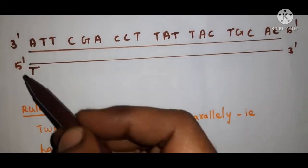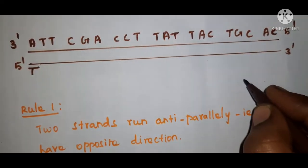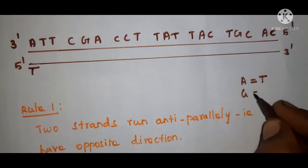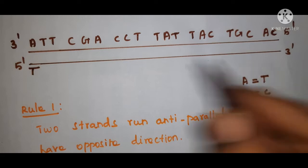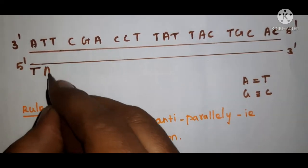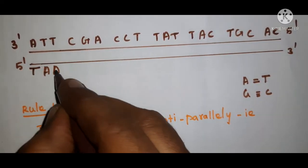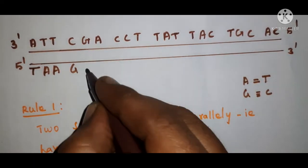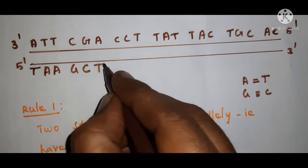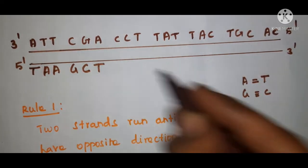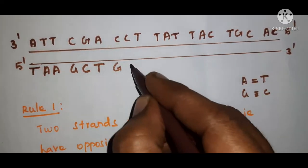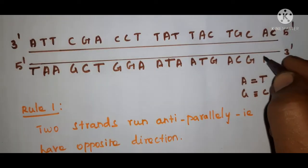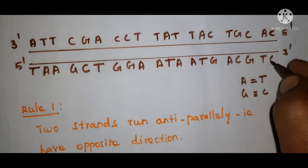Adenine always bonds with thymine (A double bond T), guanine triple bonds with cytosine (G triple bond C), T pairs with A, and C pairs with G. So for the given strand the complementary bases written out are: G, C, A, T, C, G, C, G, T, A, A, T, C, G.